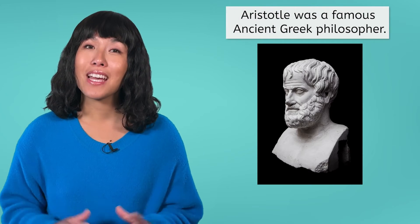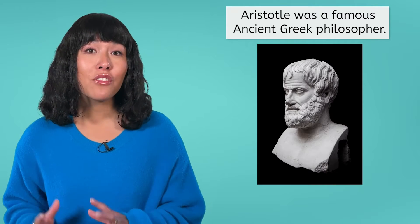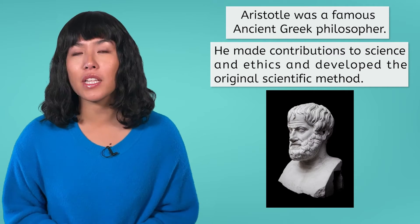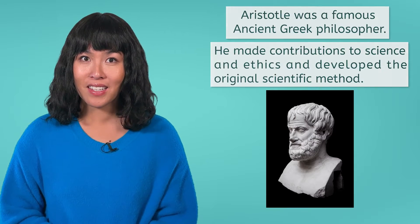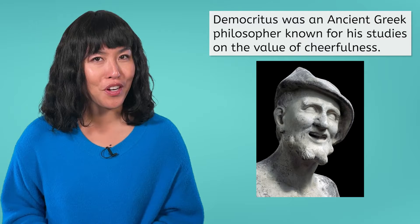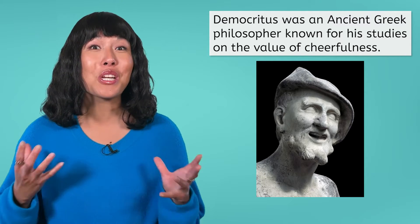Have you ever heard of Aristotle? Chances are the name is familiar. Aristotle was a famous ancient Greek philosopher. As one of the most influential philosophers of his time, he made huge contributions to science and ethics and even developed the original scientific method. Have you heard of Democritus? Probably not. Democritus was a contemporary of Aristotle and was also a philosopher. In fact, he was known as the laughing philosopher because of his studies on the value of cheerfulness.